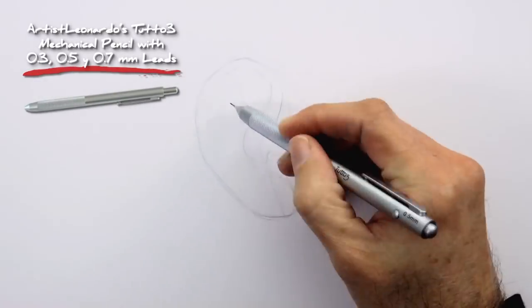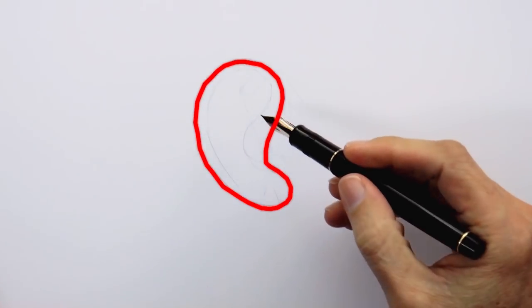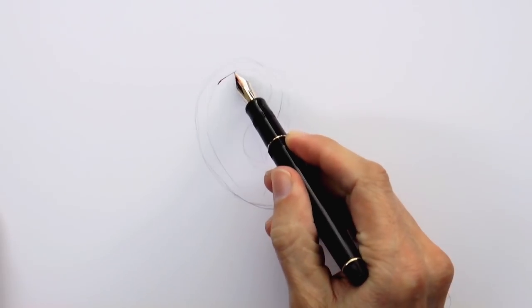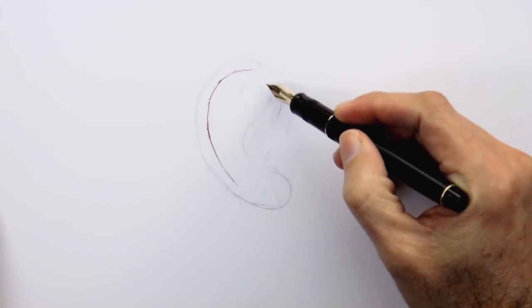Having made this basic shape with a pencil, we can then go over it with a fountain pen, or with the pen that you will be using. I will first go over the lines of the helix, the outer part of the ear. Like so.